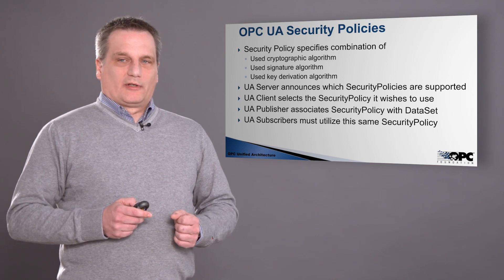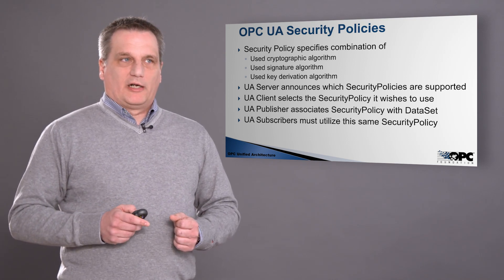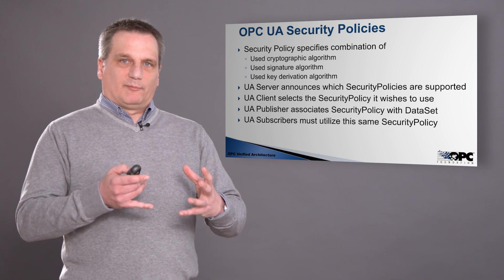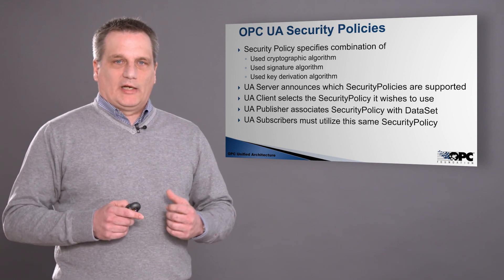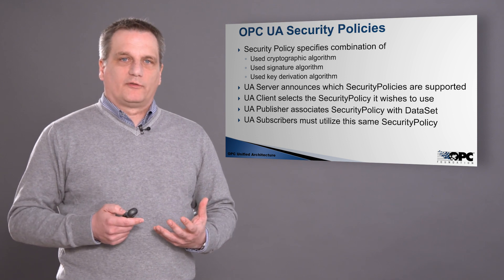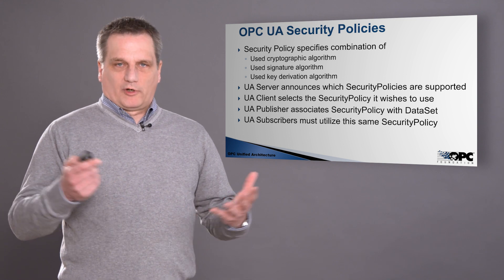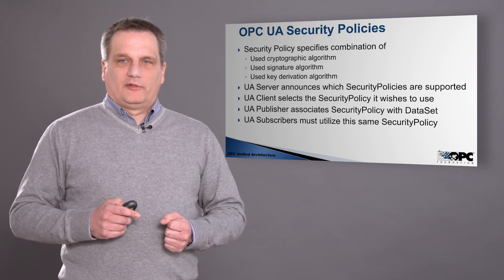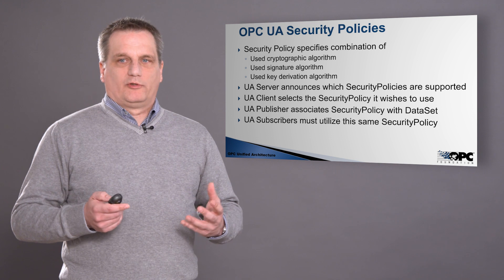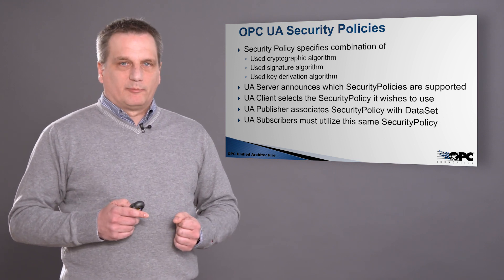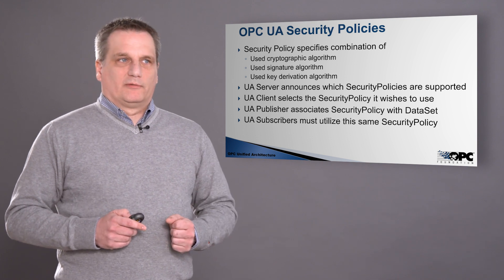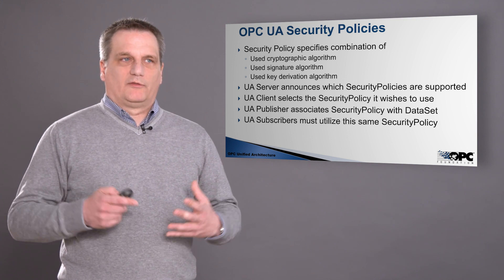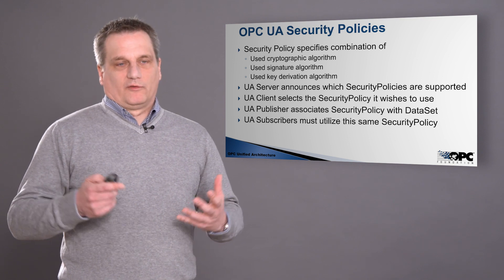Security policies are used to describe the cryptographic algorithm, the signature algorithm, and the key derivation algorithm — all described in one security policy. An OPC UA server announces the security policies it supports for the different endpoints it offers to connect to. The client can read out these policies and then decide which one to use — typically the highest available — to connect and encrypt the information. For publishers, the security policy is associated with the data set and the security group.